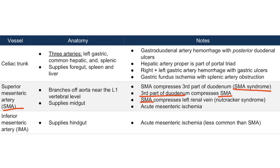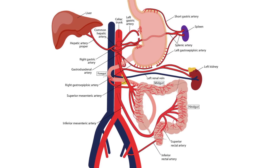Now let's talk about how the SMA can compress another local structure — the left renal vein. Like the third part of the duodenum, the left renal vein crosses the aorta posterior to the SMA in order to drain into the IVC. When the fat pad is diminished, this vein can be compressed, and this is called nutcracker syndrome. The left renal vein crosses through this fat pad anterior to the aorta but posterior to the SMA. Know the anatomy — the third portion of the duodenum and the left renal vein both pass through this region.